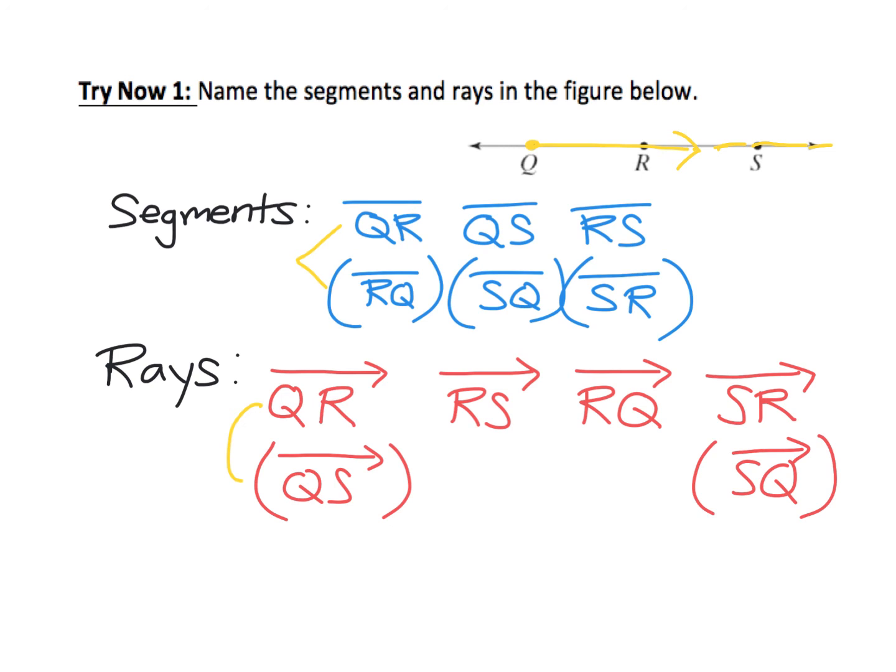For ray RS, we start at R and go toward S. For ray RQ, we start at R and go toward Q. Notice here, didn't ask you about this, but RS and RQ are the pair of opposite rays.